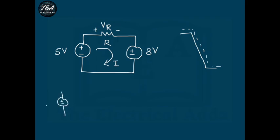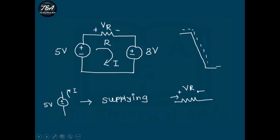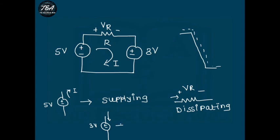Applying the sign convention: across the 5-volt source, current flows out of the positive terminal, so this source is supplying power. For the resistor, current enters the positive terminal, so power is dissipated across the resistor. For the 3-volt source, current also enters the positive terminal, so the 3-volt source is also dissipating power. Therefore, the 5-volt source supplies energy, while the resistor and the 3-volt source dissipate energy.